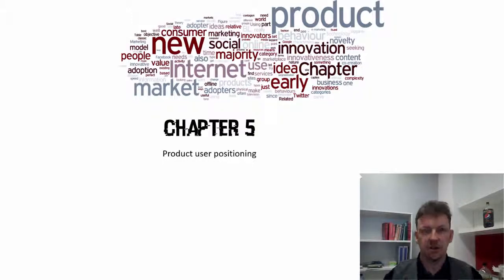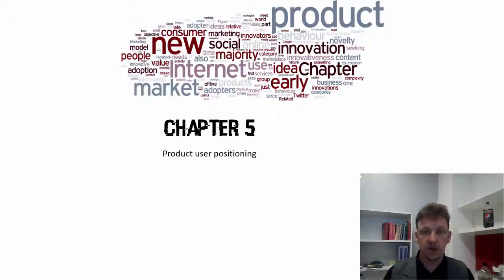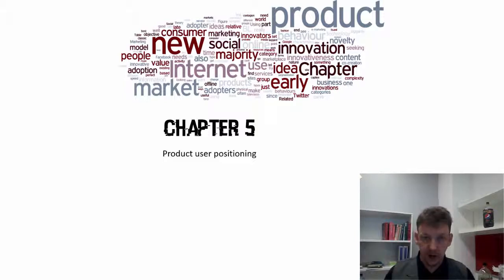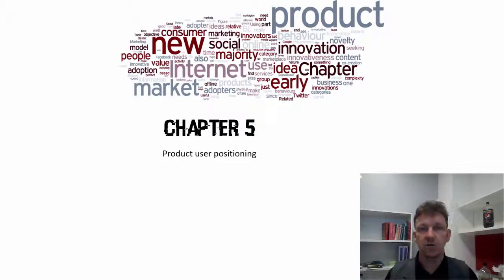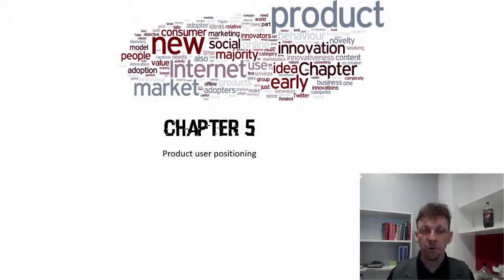Chapter 5, Product User Positioning. Chapter 5, the Consumer Behavior chapter, is a chapter that I am asking you to read. I'm not going to go through it in the videos because a lot of what you need to do with Chapter 5 is contextualize it to your own project. If you're creating a new product, you need to be looking at the innovation work. If you're creating a Me Too product, you're looking at the late majority. So there's a lot of contextual work and co-creation work you have to do to get the best out of the theory.